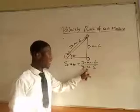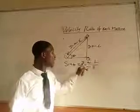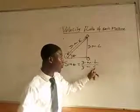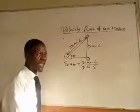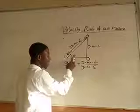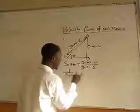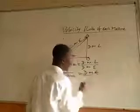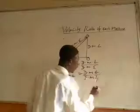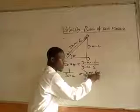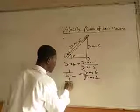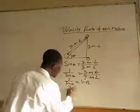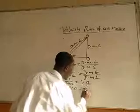That is the reciprocal of the actual formula for velocity ratio, which is distance moved by effort over distance moved by load. To get the velocity ratio, take the reciprocal of both sides: 1 over sin θ equals the distance moved by effort over distance moved by load. Therefore, the velocity ratio for an inclined plane is equal to 1 over sin θ.